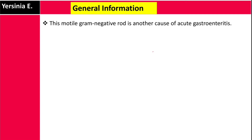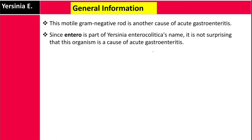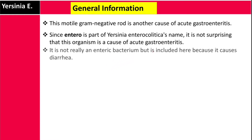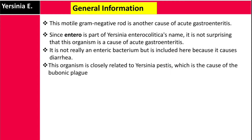Yersinia enterocolitica — general information. This motile gram-negative rod is a cause of acute gastroenteritis. Since 'entero' is part of its name, it is not surprising that this organism causes acute gastroenteritis. It is not strictly an enteric bacteria, but it is included here because it causes diarrhea. This organism is closely related to Yersinia pestis, which is the cause of bubonic plague, covered in another video.